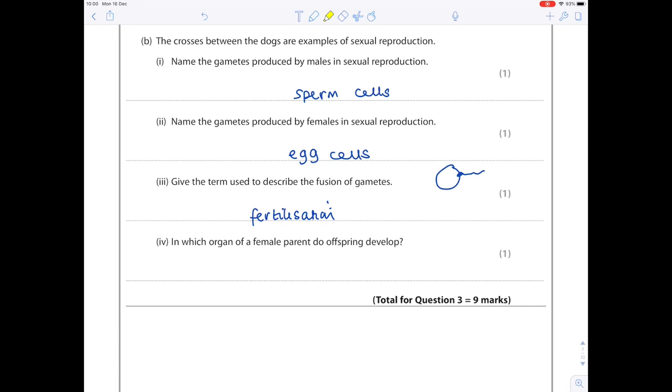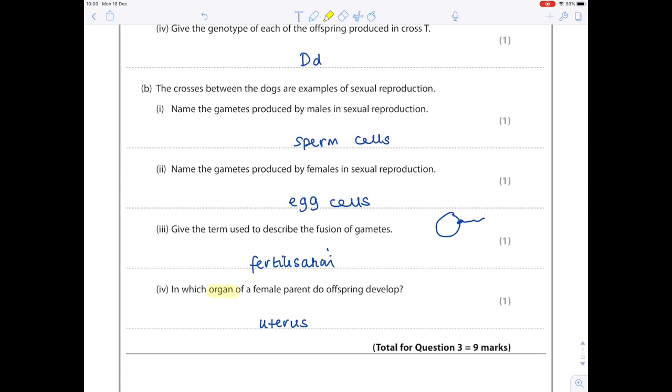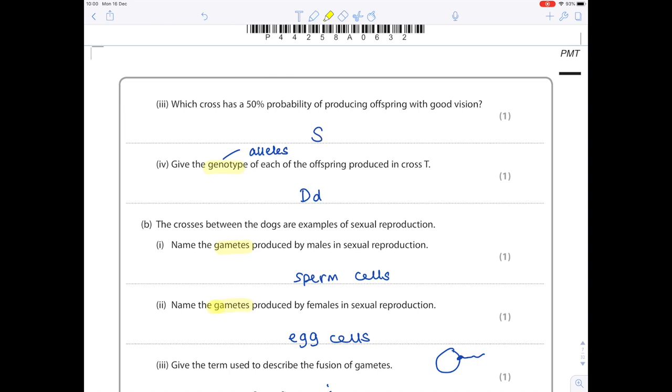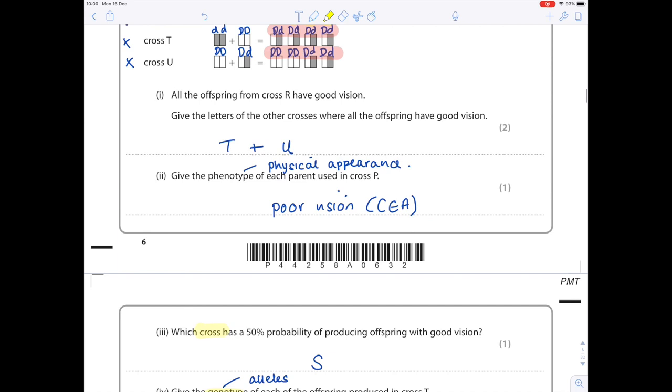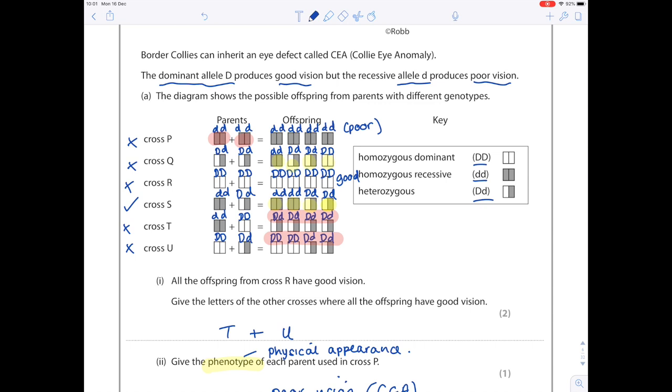Lastly, in which organ of a female parent do offspring develop? The keyword here is organ. Where does the offspring develop? It develops in the female's uterus or womb. This question was absolutely full of keywords, so I'd really use my highlighter here. I'm naming gametes, here I'm giving the genotype, here I have to provide the cross, here I'm providing the phenotype. If I hadn't read those questions properly and started writing genotypes where I was supposed to be writing phenotypes and vice versa, I'd automatically be giving myself zero marks, which would be a huge shame considering I know this and understood it. I hope you notice this question required quite a lot of time, quite a lot of input. Definitely not one to rush through. If you're not confident, go back and answer it at the end.